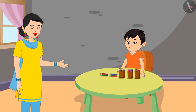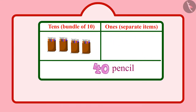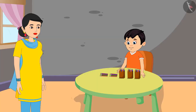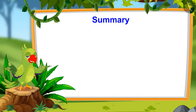How many tens do you have now? Mommy, 40 pencils means I have 4 tens. Isn't it, mommy? And units? Mommy, there are no units in 40. Yes, Chotu, there are only 4 tens in 40 and 0 units.